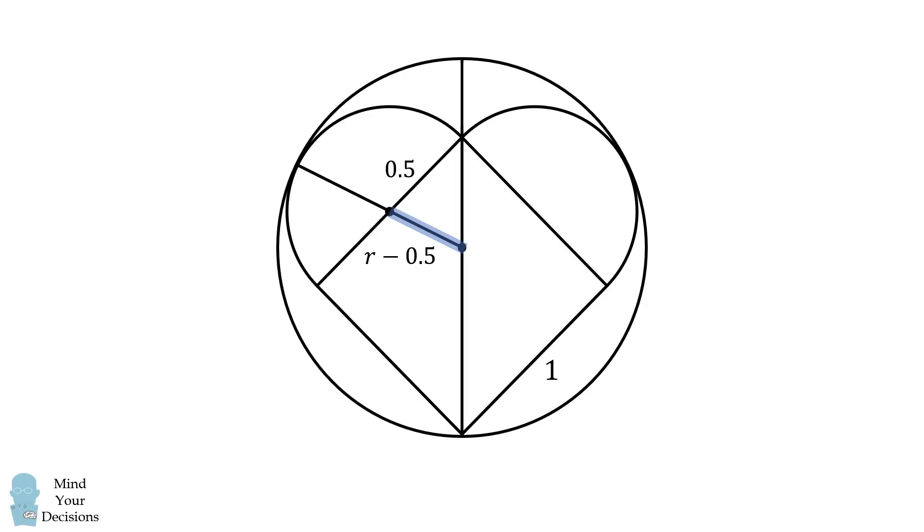Notice it will be a diameter of the large circle, and it will go through two corners of the square. Since the square has a side length equal to 1, the diagonal of the square will be equal to the square root of 2.